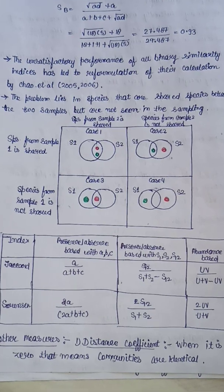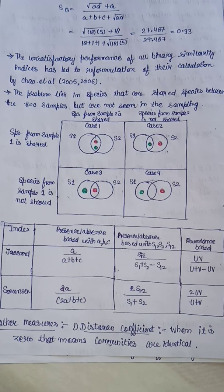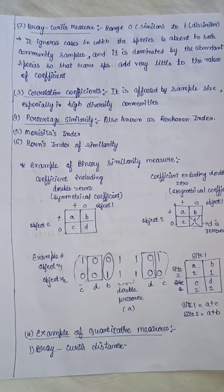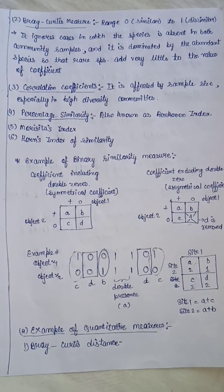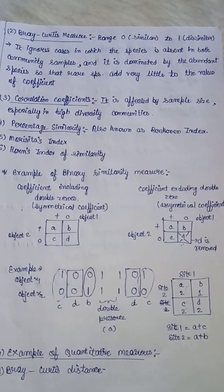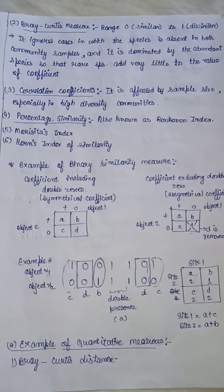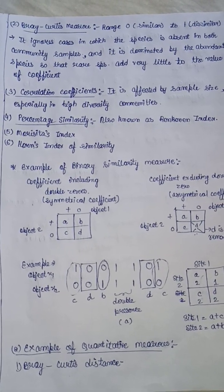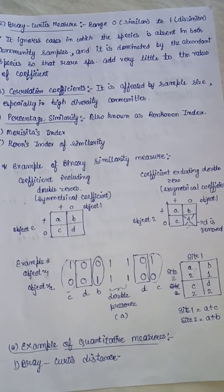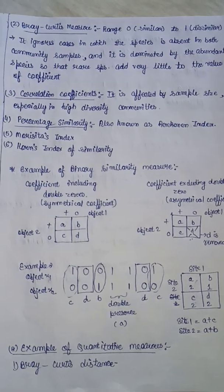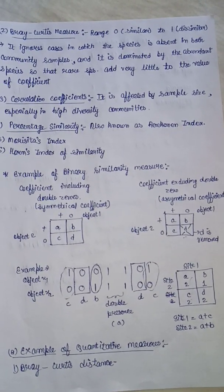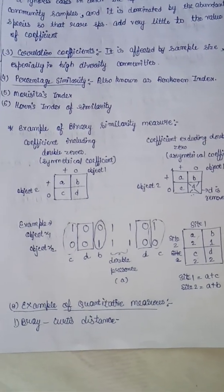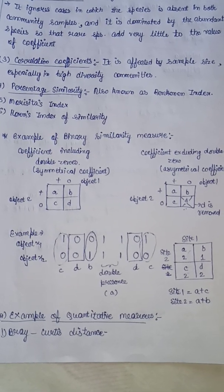Other measures to calculate the similarity index include: first, the distance coefficient — when it is zero the communities are identical; range is zero (similar) to one (dissimilar); it ignores cases where a species is absent in both samples and is dominated by abundant species, so rare species contribute little. Second, the correlation coefficient, which is affected by sample size — especially in high-diversity communities. Third, percentage similarity, also known as the Renkonen index. Others include the Modicitas index and Horn's index of similarity.